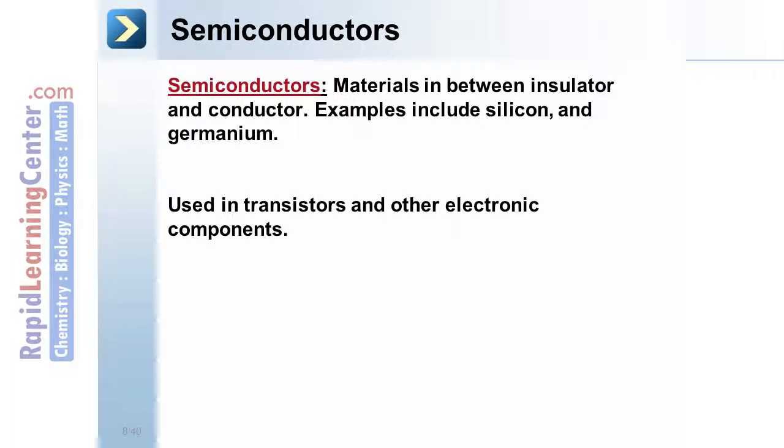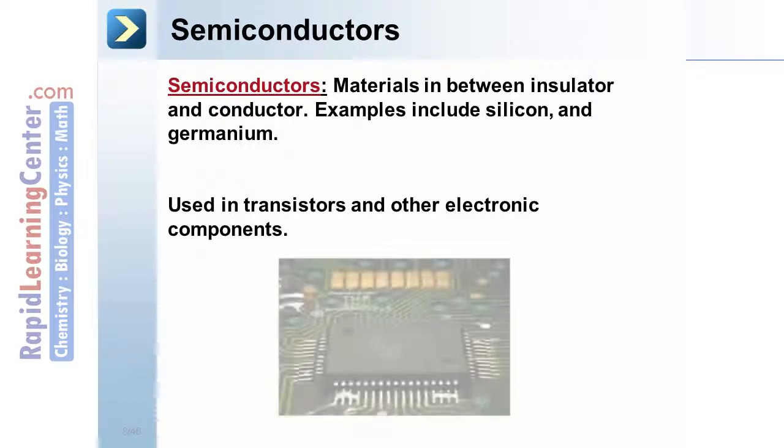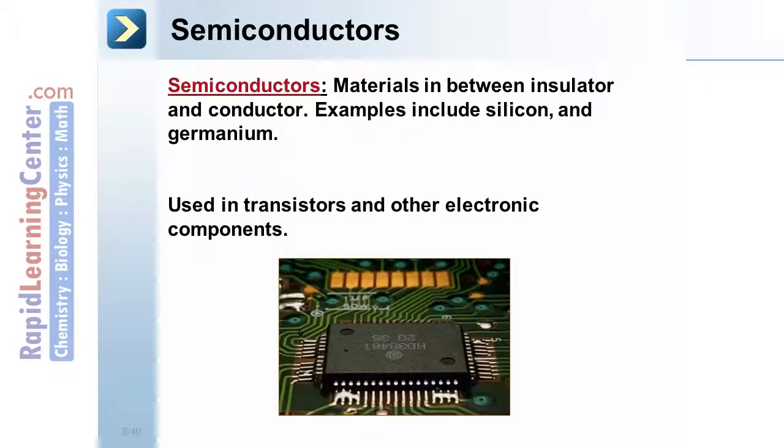Semiconductors. Materials in between insulators and conductors. Examples include silicon, carbon, and germanium. These are used in transistors and other electronic components. In fact, the word semiconductor is very strongly associated with the computer industry.